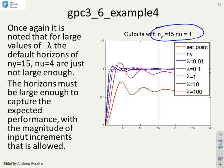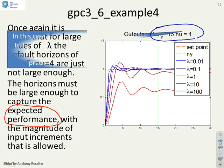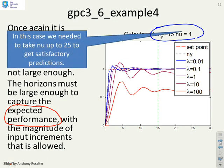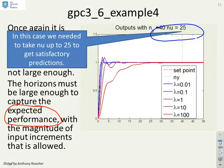So the horizons need to be large enough to capture the expected performance, and this is key: you've chosen a performance index which weights the errors and the control increments, and that will indicate the sort of performance you expect. And if lambda is very large then that performance could be quite slow.